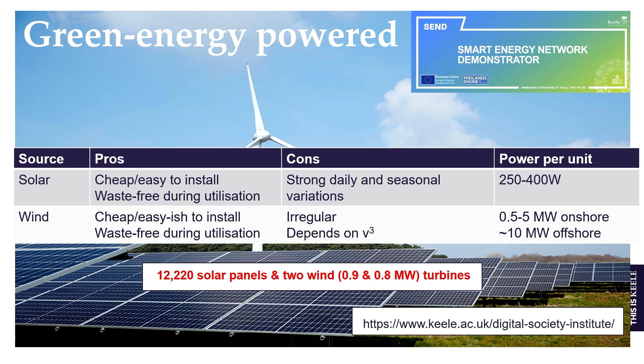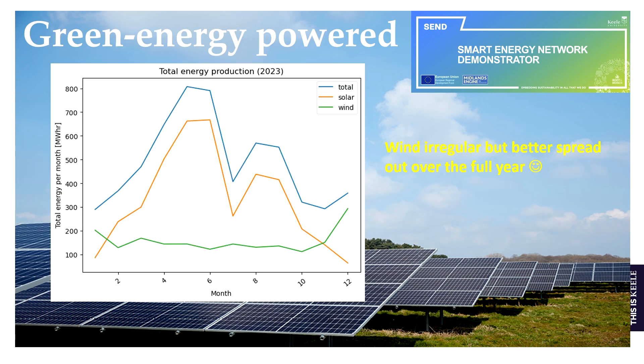Wind power depends on the cube of wind speed, so you really want a windy place — that's why the UK is quite good for wind. If you change the wind speed by a factor of two, the power changes by a factor of eight. Ballpark figures: the largest offshore wind turbines go up to 10 or 15 megawatts, though that's the advertised number for high wind speeds.